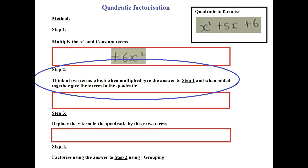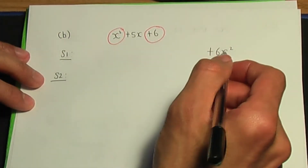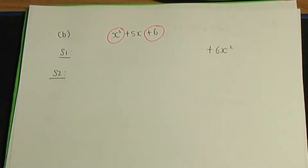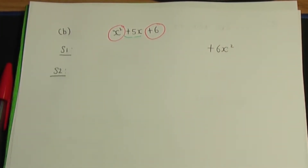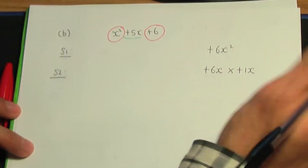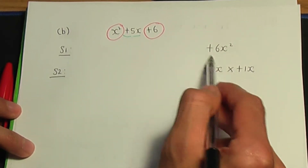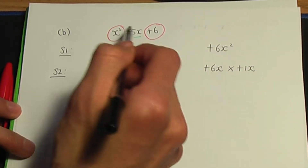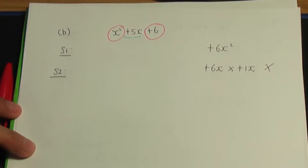Step number 2: think of two terms which, when multiplied, give plus 6x squared, and when added together give plus 5x, the x term in the quadratic. Let's check plus 6x and plus 1x first. Plus 6x times plus 1x gives plus 6x squared, but when you add them you don't get plus 5x. So these two terms don't work.